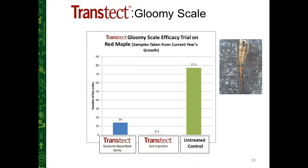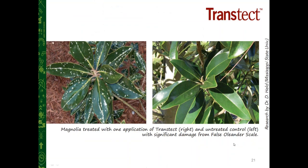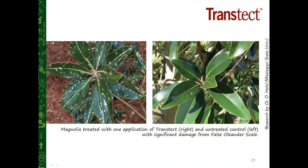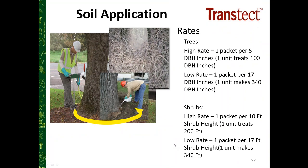Here's one more piece of data on armored scales — gloomy scale, common in southeastern and southern landscapes especially on red maple. The systemic bark spray application and the soil injection via HTI both show a vast difference in scale populations compared to the untreated control, demonstrating TransTech is very effective at both application methods. The final example is false oleander scale on southern magnolia — a common armored scale insect from Florida along the eastern coast — showing a dramatic difference between treated and untreated plants.